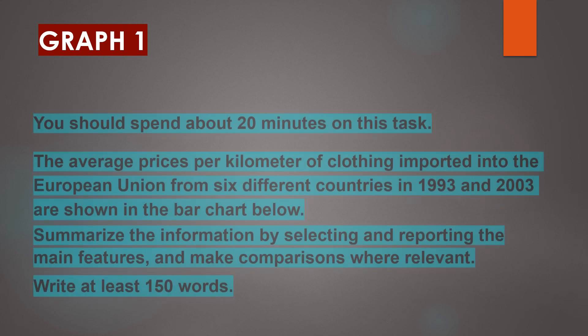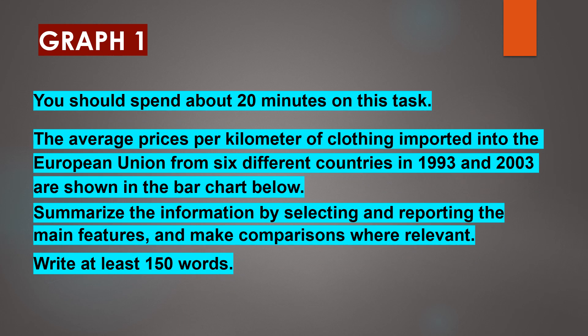Now let's take a look at graph 1. You should spend about 20 minutes on this task. The average prices per kilogram of clothing imported into the European Union from six different countries in 1993 and 2003 are shown in the bar chart below. Summarize the information by selecting and reporting the main features and make comparisons where relevant. Write at least 150 words.